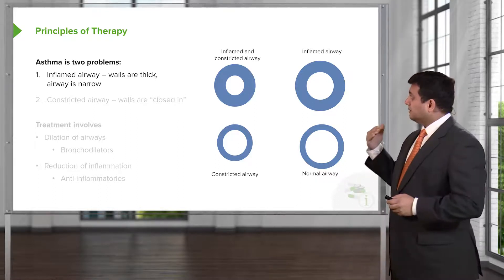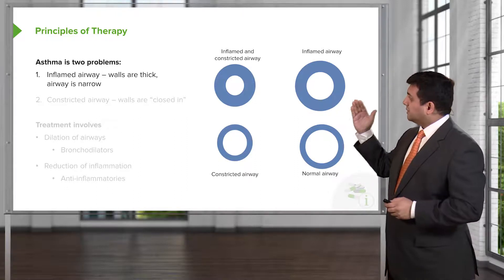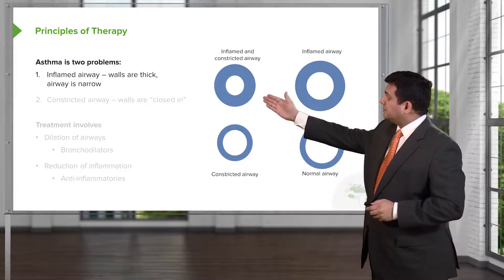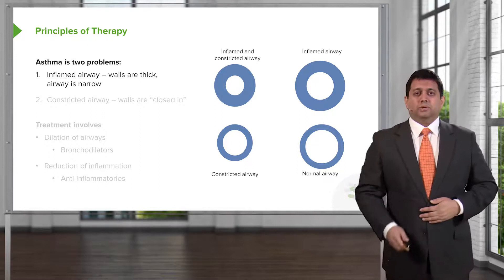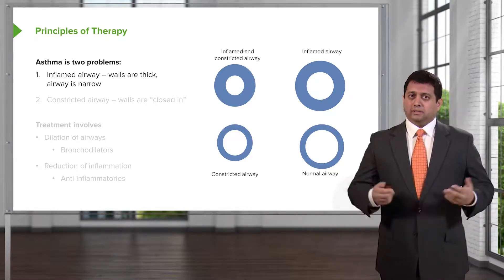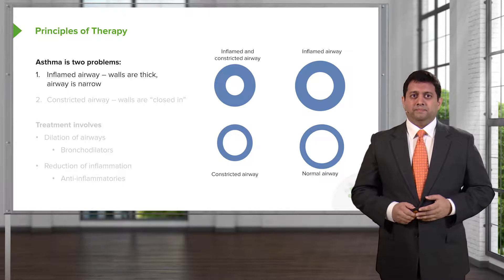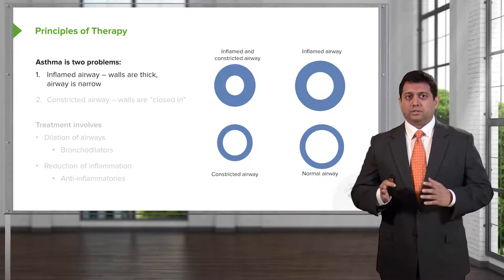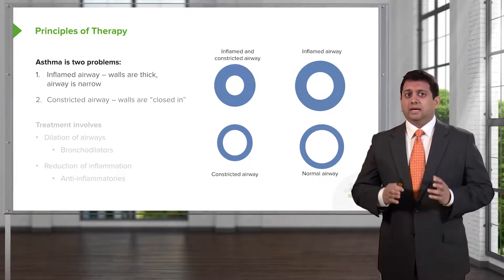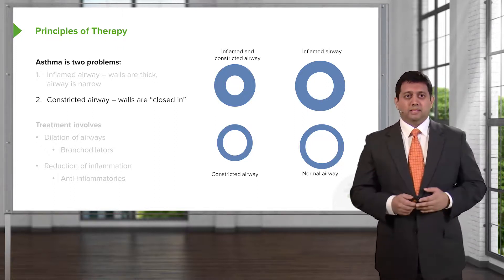And finally, in end-stage asthma, you will have a constricted and inflamed airway, which results in a very narrow lumen and real illness from a clinical point of view. So inflamed airways have thick walls and a narrow airway. A constricted airway has walls closed in and a narrow airway.